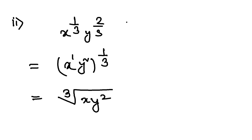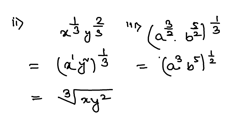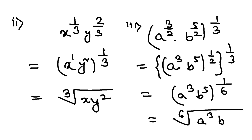Let us go to question number 3 now. The expression is a to the power 3 by 2 into b to the power 5 by 2, whole to the power 1 by 3. This gives a cubed times b to the power 5, with the half going outside, and we already have 1 by 3 outside. So this means a cubed b to the power 5, whole to the power 1 by 6 — that is, the 6th root of a cubed b to the power 5.